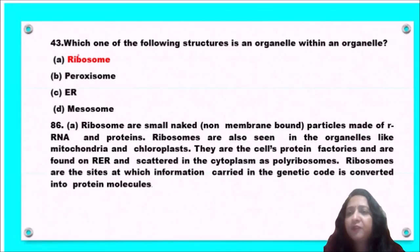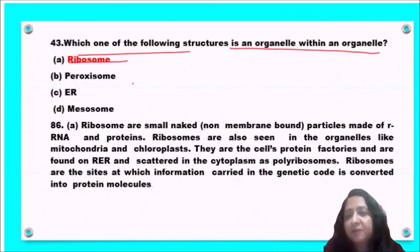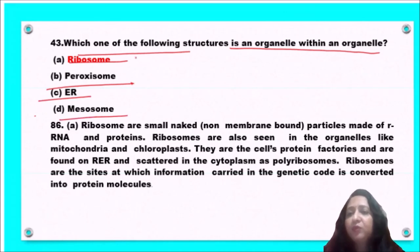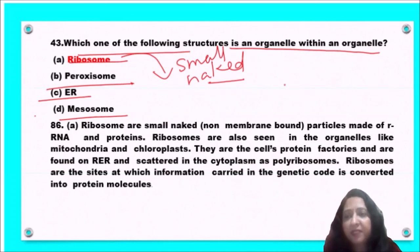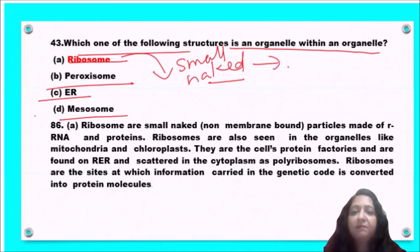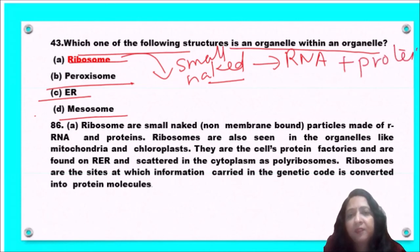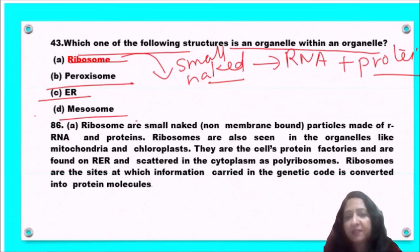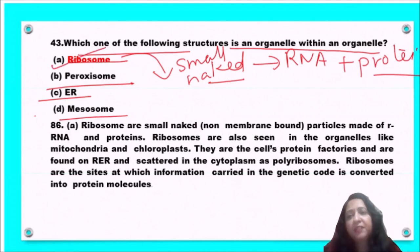Next question: which one of the following structures is an organelle within an organelle — ribosome, peroxisome, endoplasmic reticulum, or mesosome? Ribosomes are small, naked, non-membranous particles made of RNA and proteins. They are also found inside organelles like mitochondria and chloroplasts. Therefore, ribosomes are known as an organelle within an organelle.